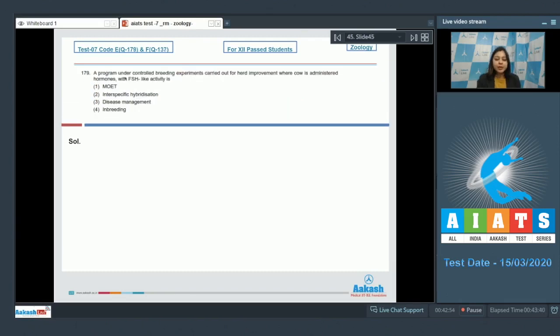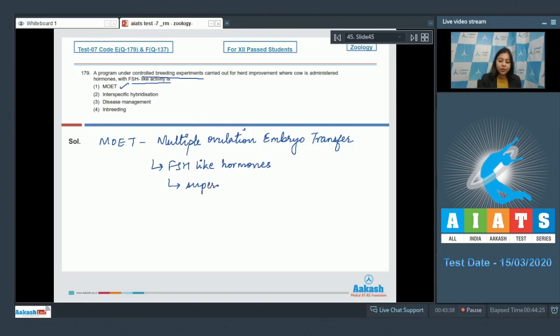Moving on to the next question—179: A program under controlled breeding experiments carried out for herd improvement where cow is administered hormones with FSH-like activity is... MOET is the correct answer. MOET stands for Multiple Ovulation Embryo Transfer. Here the cow is administered with FSH-like hormones which stimulate the follicle and the cow is made to super ovulate,